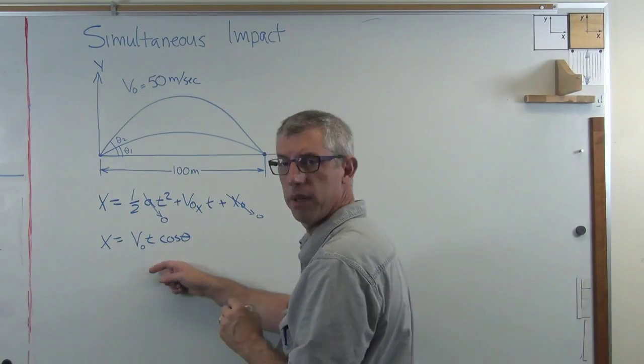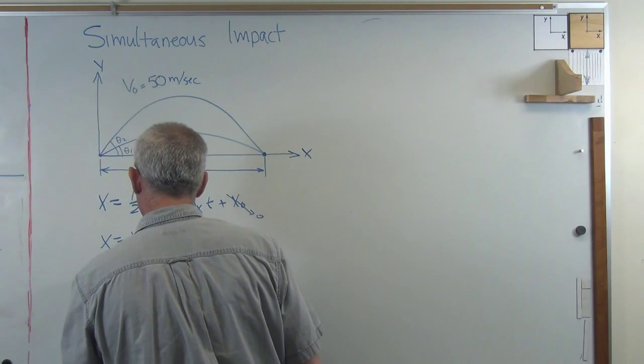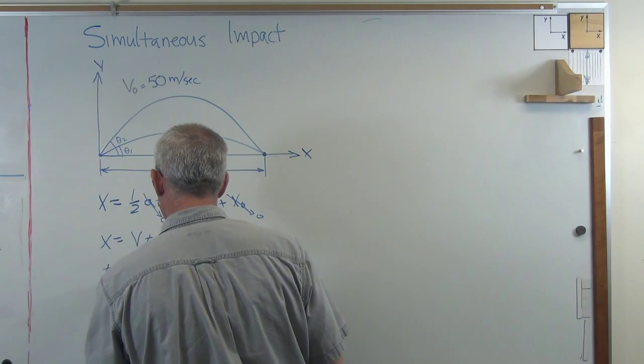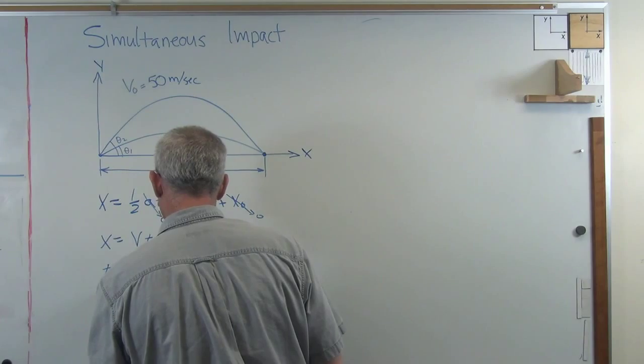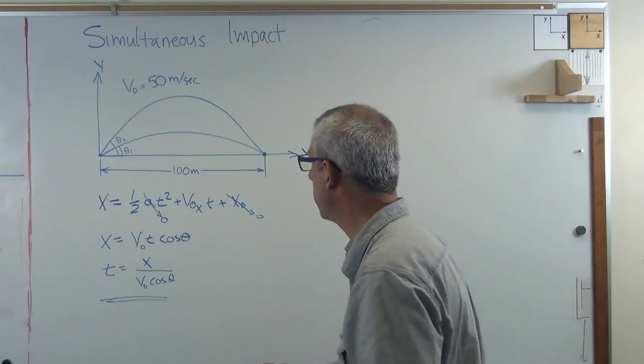Now I'm going to solve this for t. I'm going to make sure I keep in the frame I've got plenty of room. Okay, so t is going to be x divided by v₀ cosine theta. All right, so that's an important equation. We're going to need that one here in a second. There's motion in the x direction.